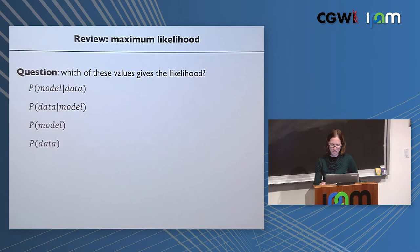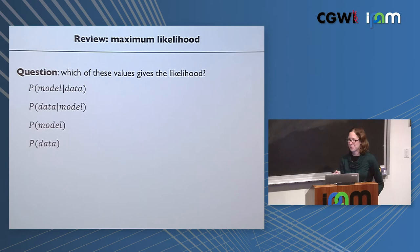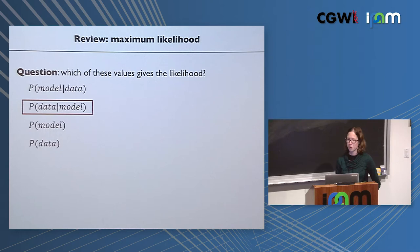First, a basic question: which of these values gives the likelihood? Likelihood is the probability of the data given some underlying model. These other things also have names. Remembering Bayes' rule, we can relate them all together. Here's our likelihood term — the probability of the data given the model.